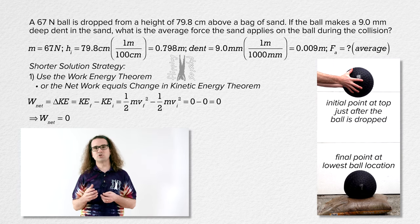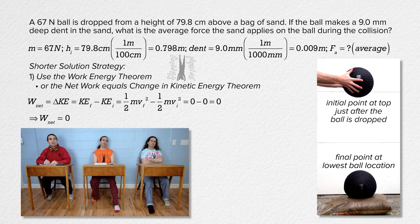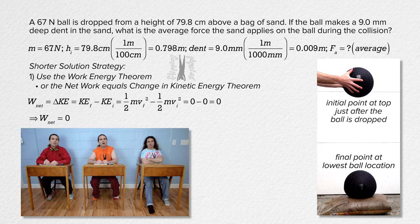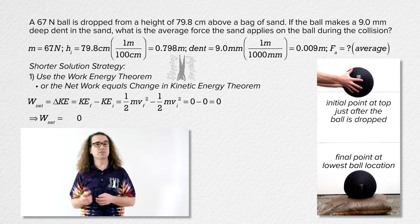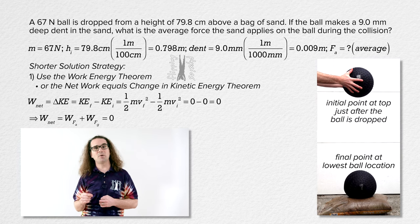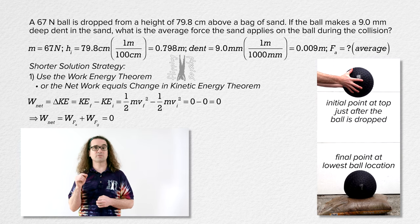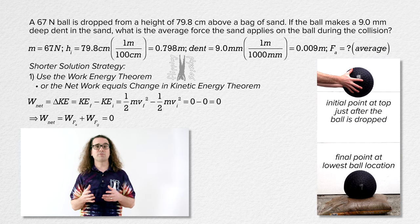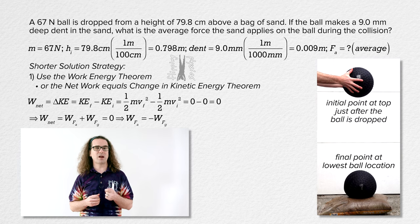Bo, again, what forces do work on the ball? There is a force applied acting upward on the ball as it collides with the ground, so the force applied does work on the ball. The ball has mass, so there is a force of gravity acting downward on the ball the whole time, so there is work done by the force of gravity too. That means the work done by the force applied plus the work done by the force of gravity equals zero. Therefore, the work done by the force applied equals the negative of the work done by the force of gravity.